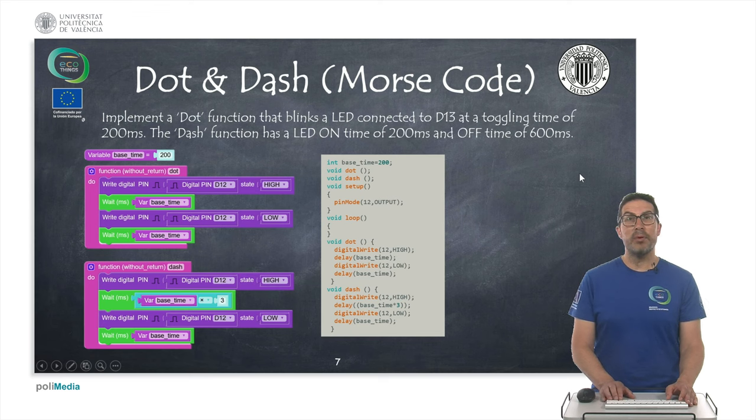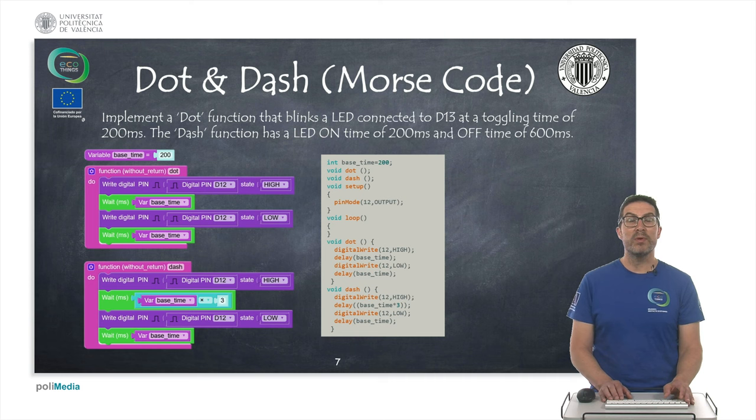And in the last example, we want to implement some kind of very basic Morse code example. And for that we need to implement the dot and the dash function.